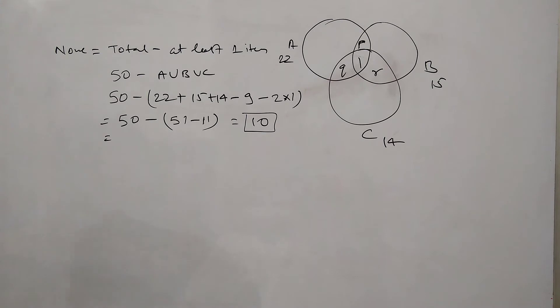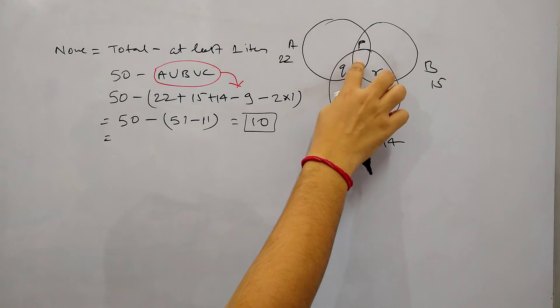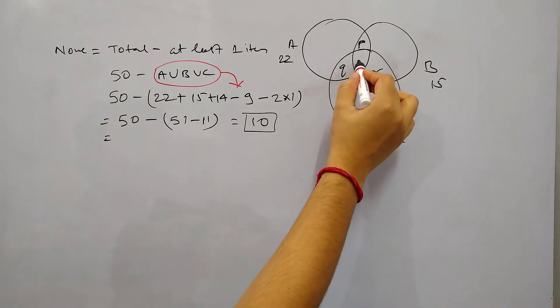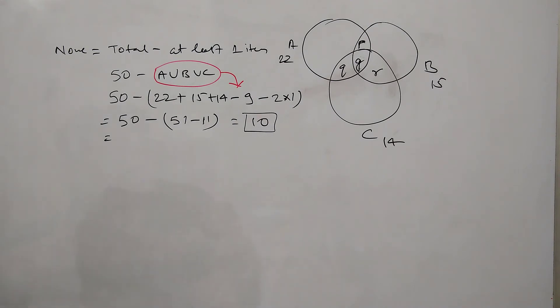But in case you are facing difficulty, I think the problematic part for you could be here, how we are getting this A union B union C to this. So to understand this part I will explain. So let's denote the center as G, we have given it as G.